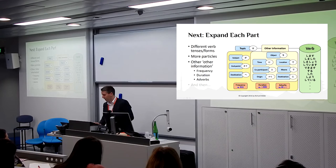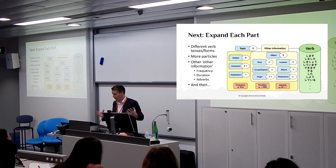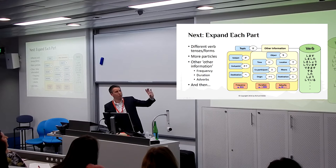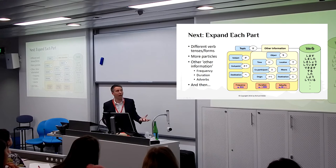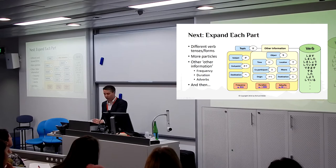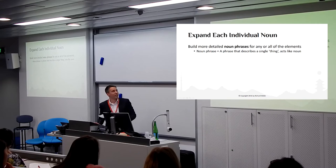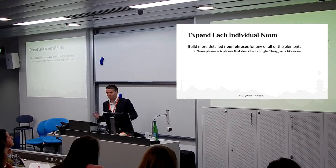The next major thing — the other hugely important way in which we can expand on this basic structure — is to look at each of these individual blue things in particular. Well, it applies to the others as well, but the blue ones, if you notice, they're all things. And things are represented by nouns. So what we can do is we can add more information about those nouns, about those things, by building more detailed noun phrases. A noun phrase is any phrase that describes a single thing, and therefore it acts like a noun in a grammatical sense.